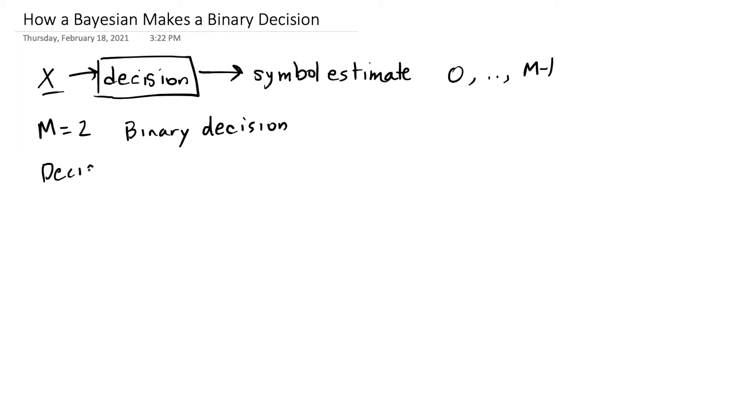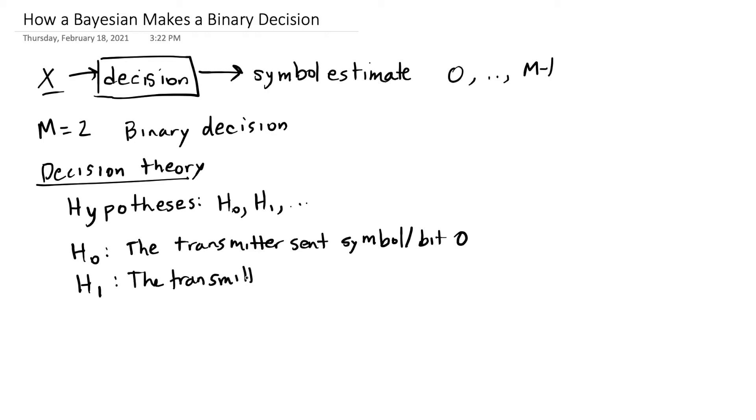In an area called decision theory, we're going to choose between different hypotheses about what happened. We have our hypotheses labeled with a capital H. And for this case, because we're talking about a binary decision, we're going to talk about two hypotheses: H0 that the transmitter sent symbol zero or bit zero, and H1 that the transmitter sent symbol one or bit one. It's the same thing because a symbol is one bit when we only have two symbols.